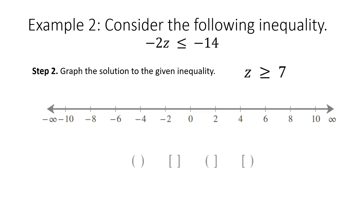Step 2: Graph the solution to the given inequality. We have z is greater than or equal to 7. This is a half-open interval — we use a bracket at 7 since the endpoint is included. Since z is greater than or equal to 7, it goes towards positive infinity, which uses an open parenthesis. I'll select the bracket and open parenthesis, place the bracket at 7, and take the arrow to positive infinity.